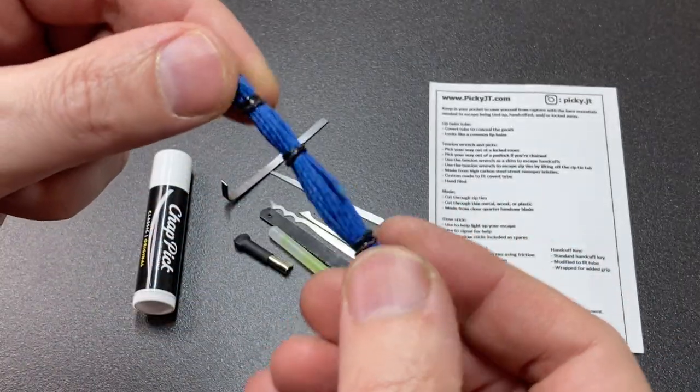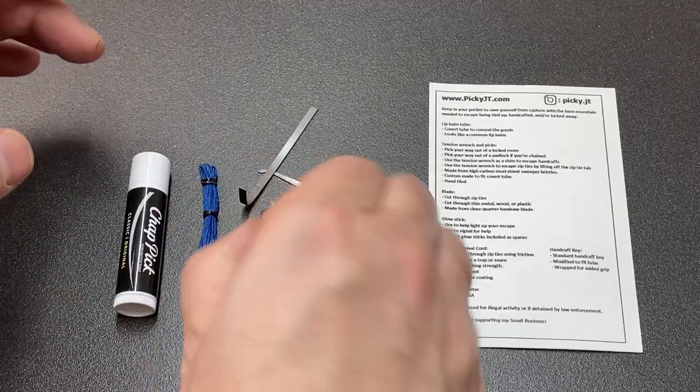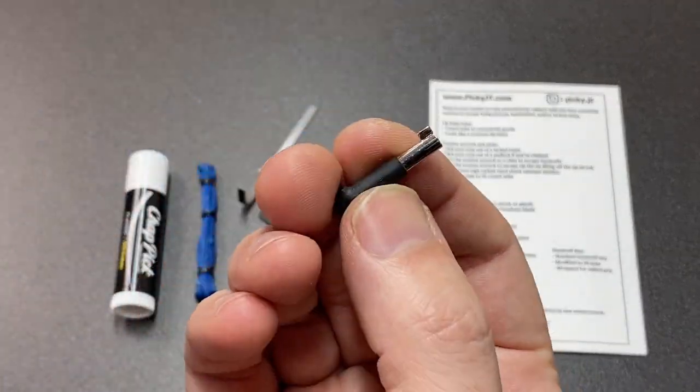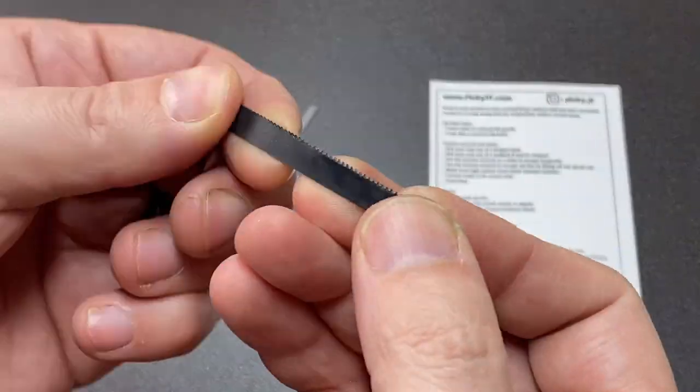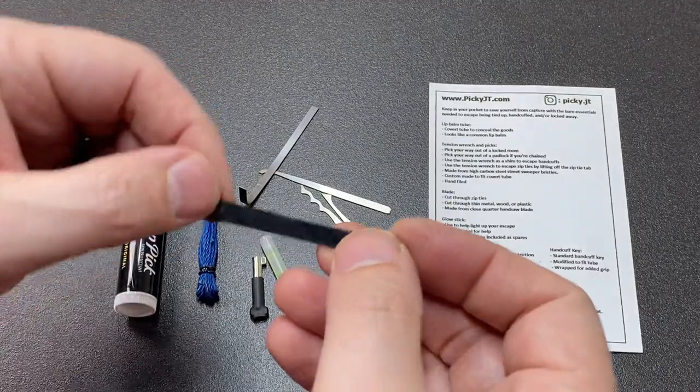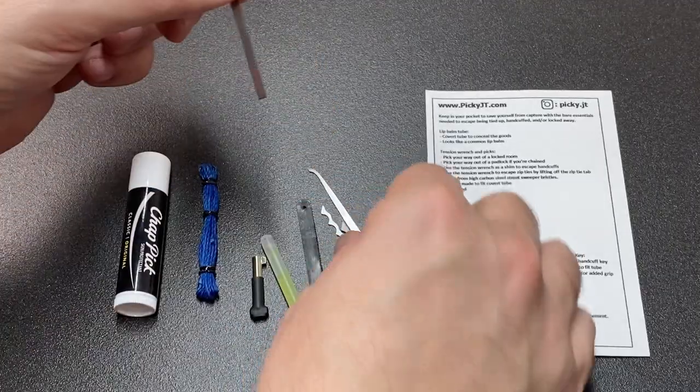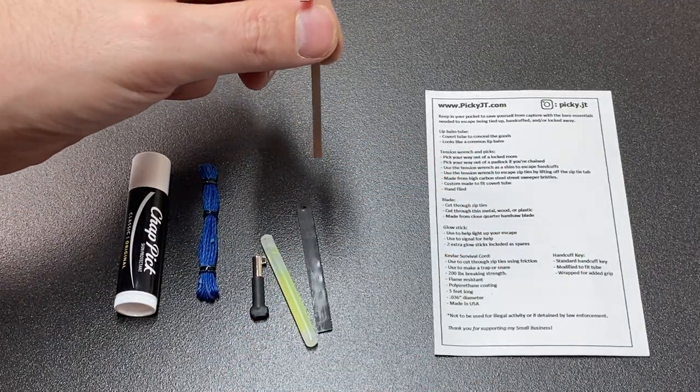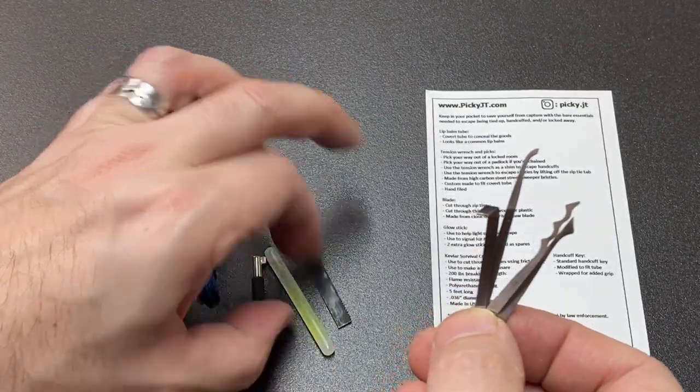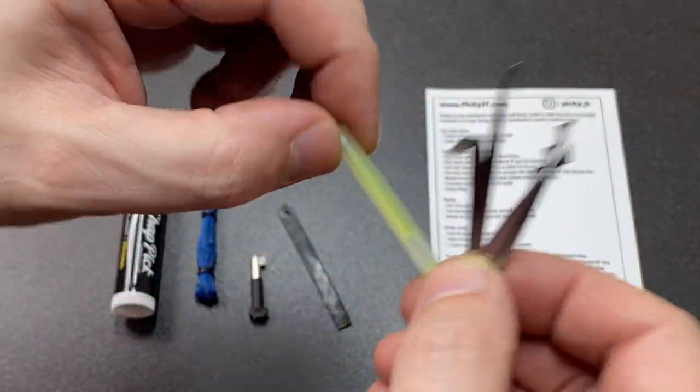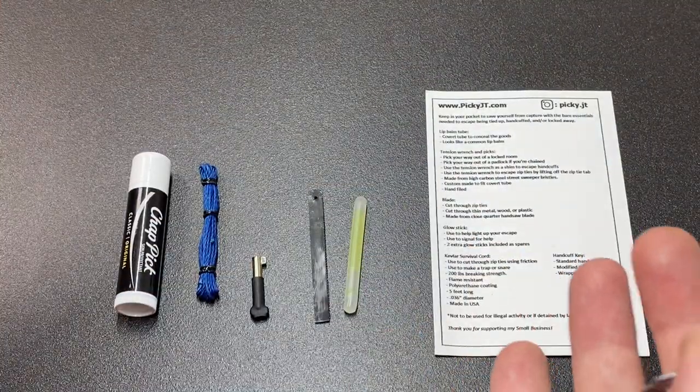The handcuff key works on most standard handcuffs. The saw is a real piece of saw blade, works exactly as you'd expect. How useful could a saw be in certain situations? The pick tools are all very nice, and it's great they provide spares of the glow stick. Any downsides?